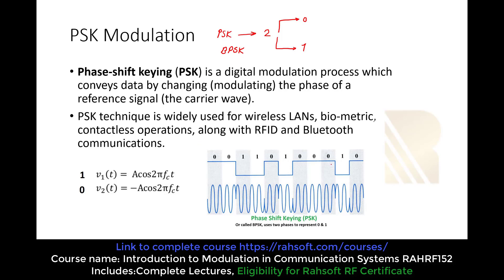We can see in this picture what is going on and how we can modulate the data. For BPSK, we have binary data of one and zero. It's very simple: when the data is zero, we are going to send minus A cosine of 2π f_c t. And when the data is one, we are going to send A cosine of 2π f_c t.